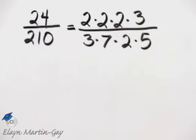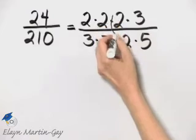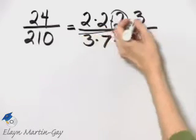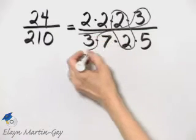Once we prime factor the numerator and the denominator, we can see if there are any common factors. Notice there's a common factor of 2, and there's also a common factor of 3.